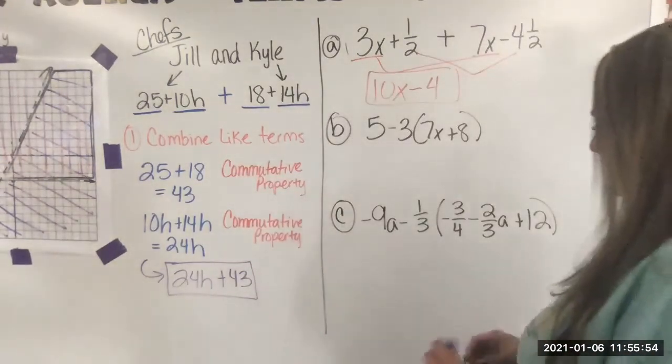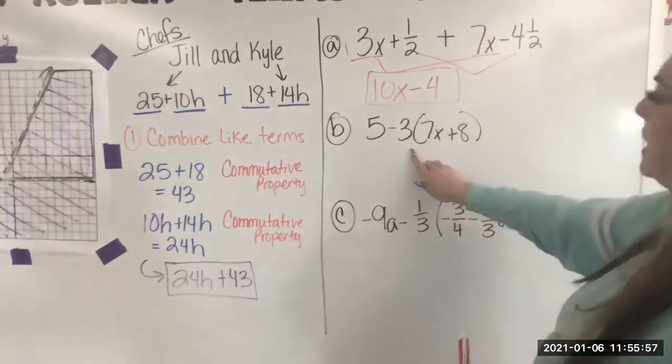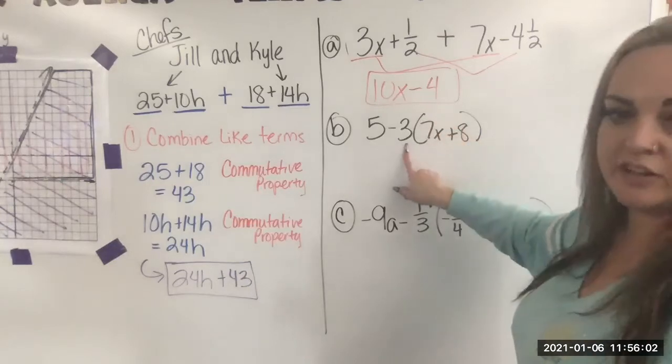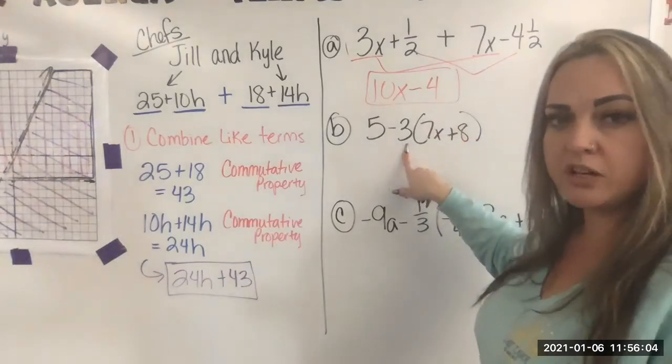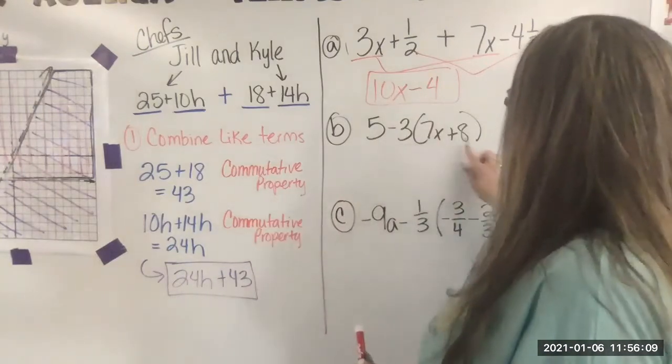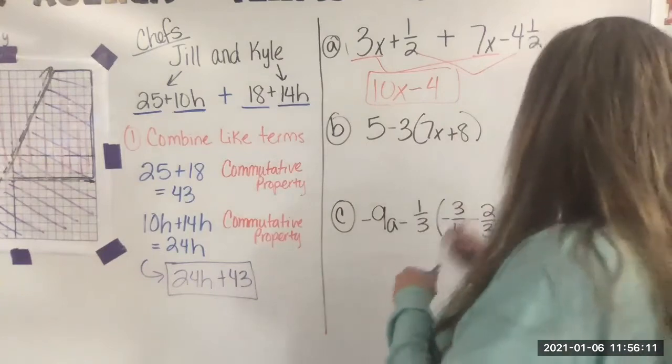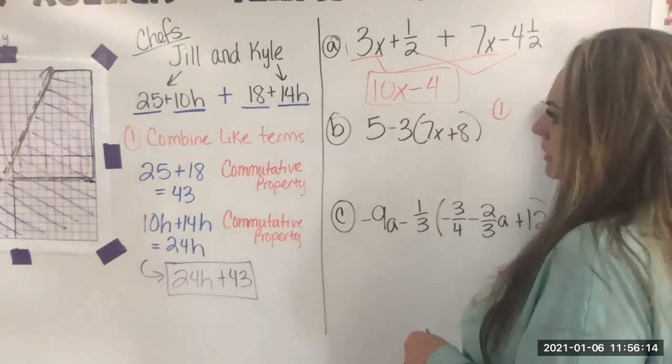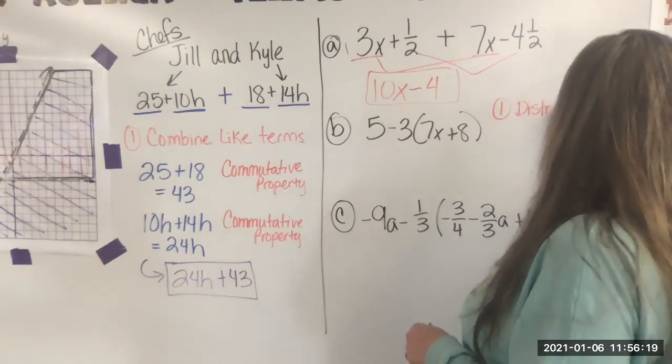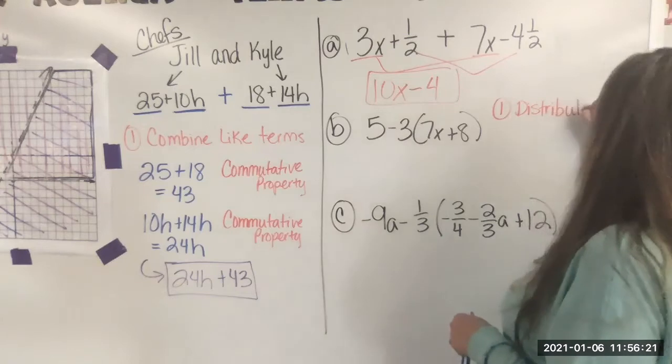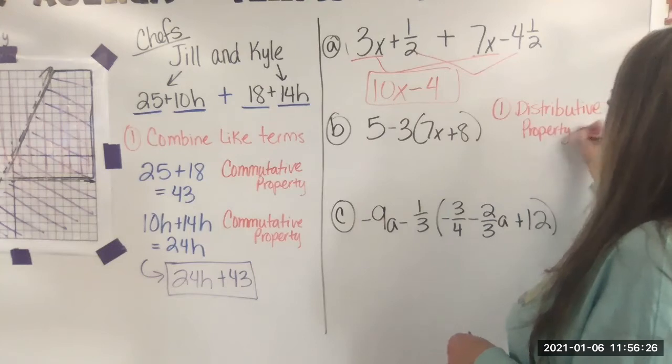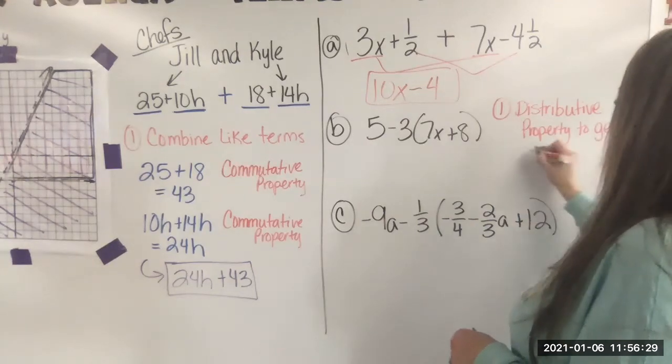This one does have some multiplication happening. I can tell because I've got parentheses and then there's a number right up against it, which tells me we need to multiply. So first thing we need to do is get rid of the parentheses. That's step one. So step one, distribute or we're going to, I'll say this, distributive property. That's what we're going to use to get rid of the parentheses.